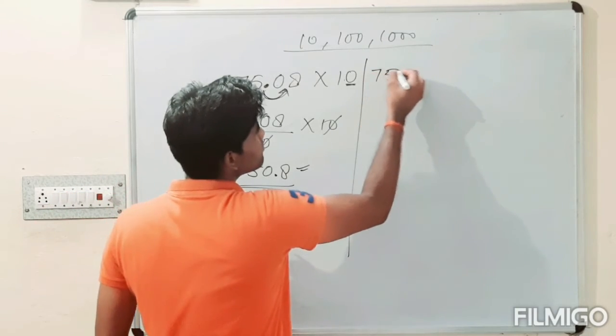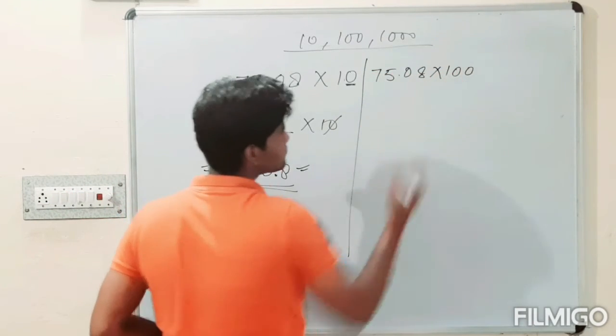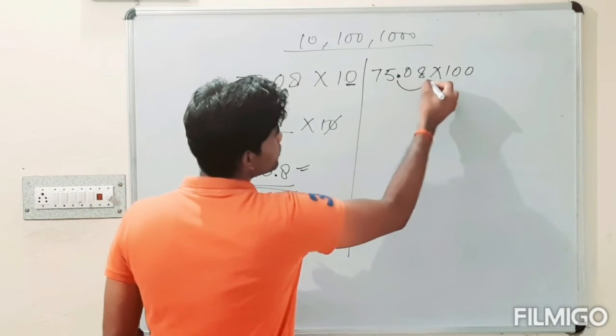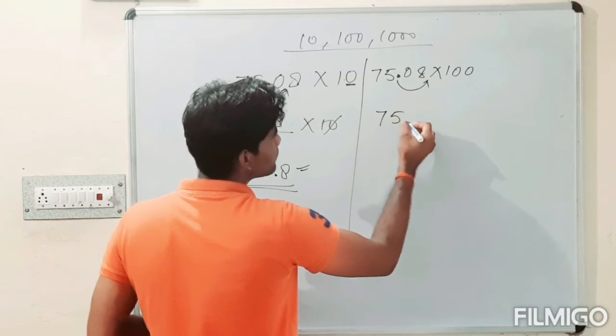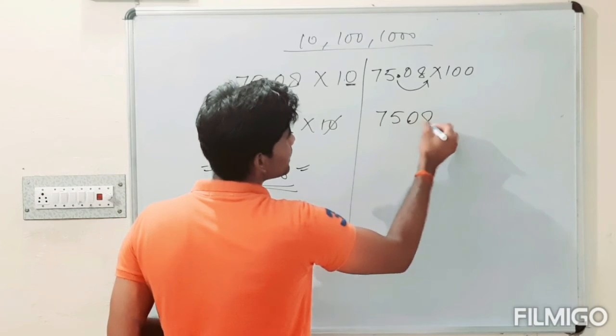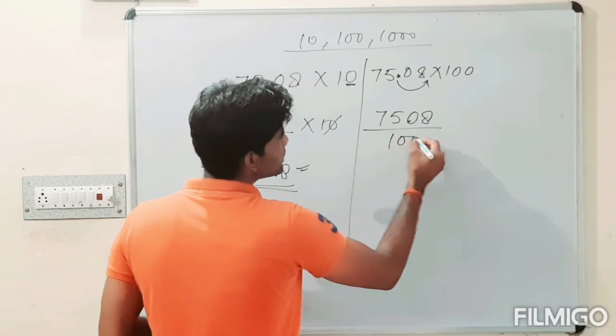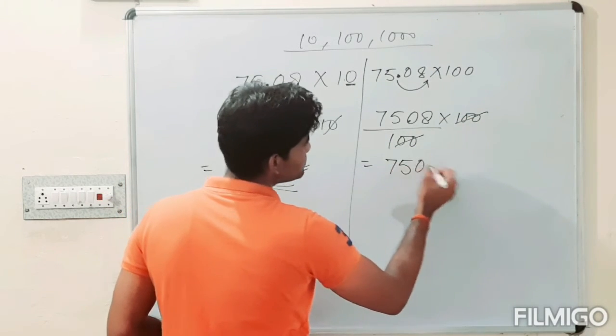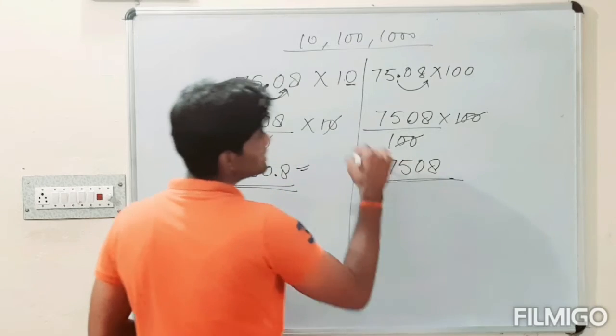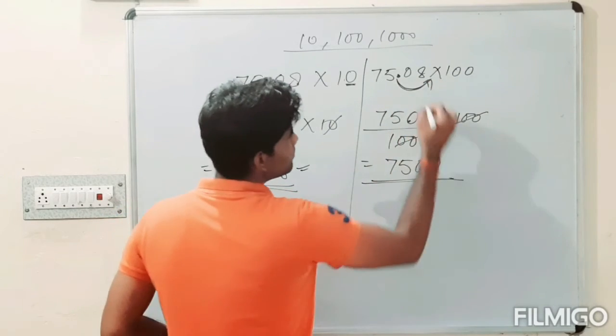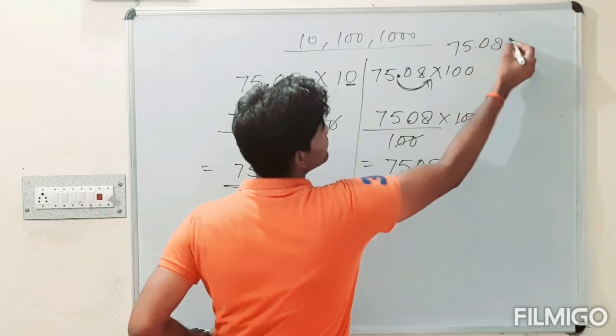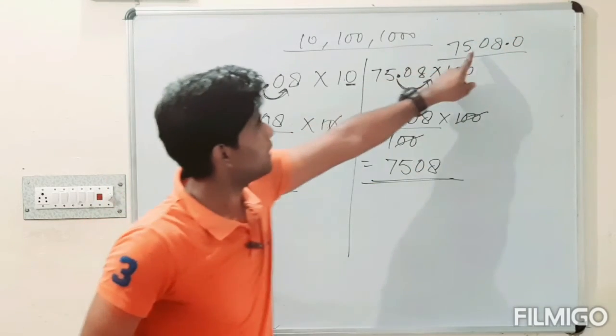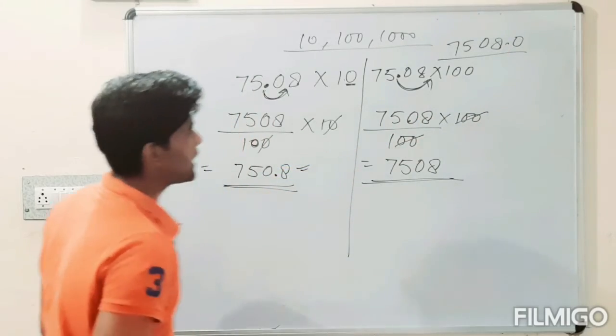Now, what will happen if this same number would be multiplied by 100. It means this point that is existed here will transport it to the right hand side. So, have a look. This point would be transported to the right hand side.